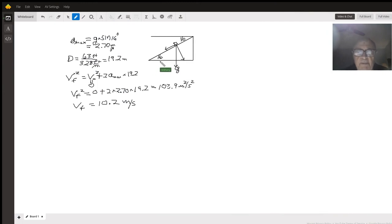Hi, the problem today is that we have a soapbox car rolling down a hill. This is the slope of the hill. It says that the angle from the horizontal is 16 degrees.